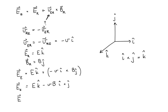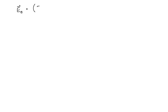So what that means is that the electric field measured by Earth is given by the electric field magnitude measured by the rocket ship, minus the product of the velocity or the speed of the rocket ship and the magnetic field measured by the rocket ship, K-hat. This gives us E minus the product of the speed of the rocket ship and the magnetic field measured by the rocket ship, all in the K-hat direction — and this tells us the electric field measured by the observers on Earth.